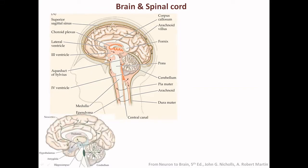In this area we can see the thalamus, which is part of the diencephalon. Below the thalamus is the hypothalamus, and nearby are the amygdala and the hippocampus. The diencephalon includes the epithalamus, thalamus, subthalamus, and hypothalamus. The pituitary gland is also visible here, located below the hypothalamus.